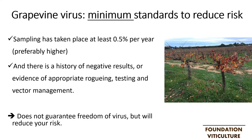There should be a history of negative results for the source block for the main virus types. If there is a positive test in the past, ask for a different source block. If this is not possible, there needs to be evidence of roguing or removal of infected and surrounding vines, further high-frequency testing and vector management to satisfy you that the risk is low. Even if all of these minimum standards are met it still doesn't guarantee freedom from virus, but it will reduce your risk.